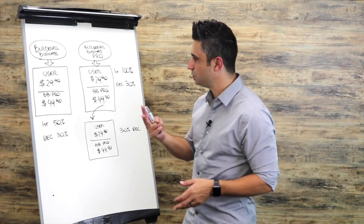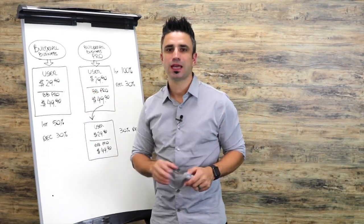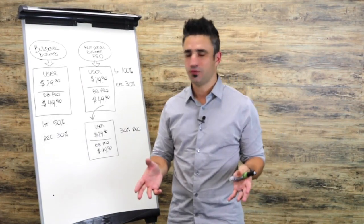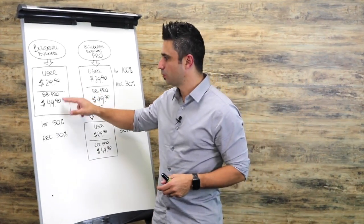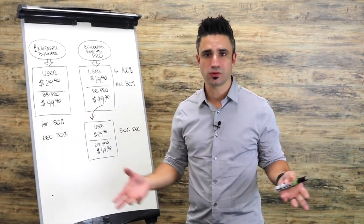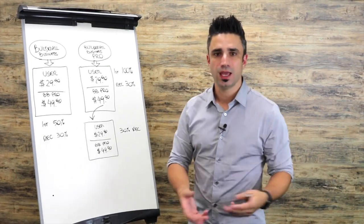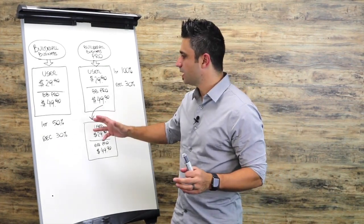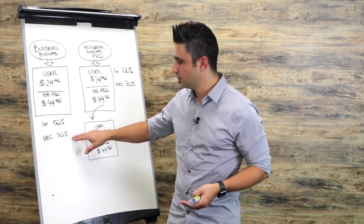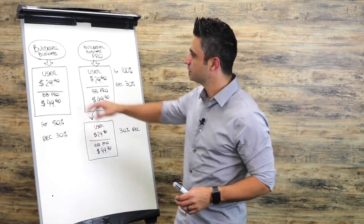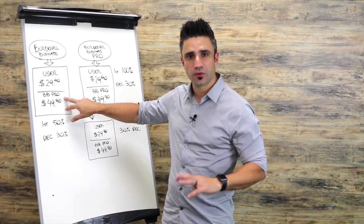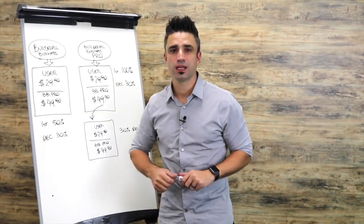What you're going to promote is basically two plans. The first one is $29.90, which is for users who get access to all the tools in the platform. Or the Builderall Business Pro, which is $49.90, and this plan includes a resource area where they can begin promoting as a business as well. Anytime you make a sale, you're going to make 50% commissions, and after the first month, you make 30% commissions. About 70% of people convert at $29.90 and about 30% convert at $49.90.